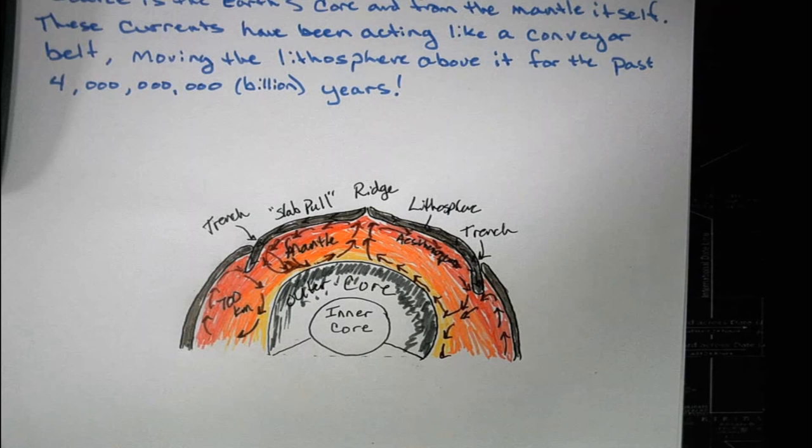The convection currents cause the mantle to rise and fall, and the circular motion floats the tectonic plates past each other. Sometimes we have massive collisions, and those are earthquakes.